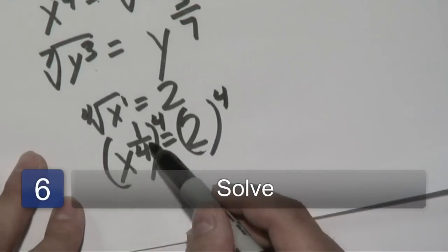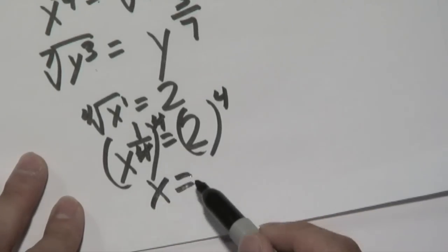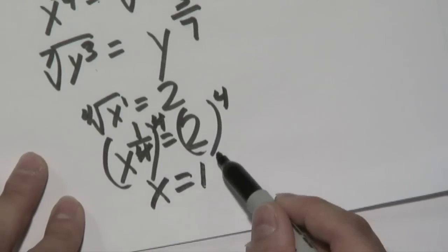Now what will happen here is the 4's will cancel. In this case, you're left with x, and 2 to the fourth is going to give you 16.